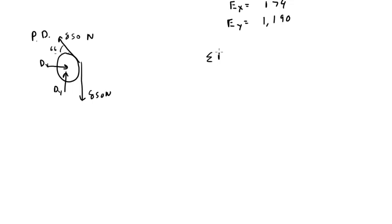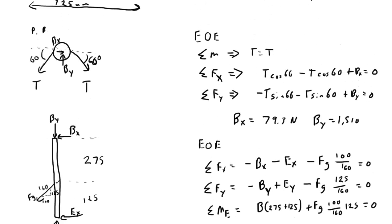And we can write the sum of forces in the X direction, equals DX minus 850 cosine 66 equals 0. And if we do that, we should get that DX equals 346 Newtons, and DY equals 73.5. And so now we know all the reactions everywhere.